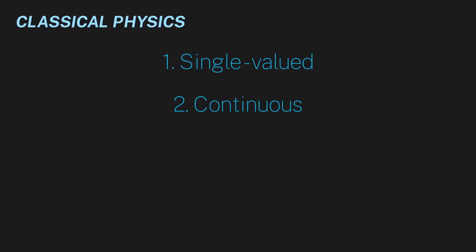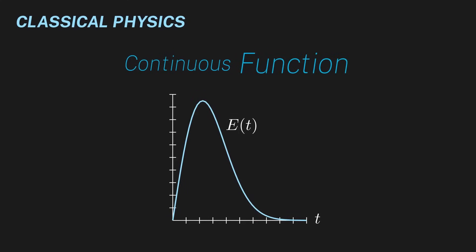Given these two observations, it hopefully seems clear that the way to model these physical quantities is with a continuous function. A function by definition only takes on one value at any single time, and a continuous function doesn't have any sudden jumps. So this is why in classical physics, we represent physical quantities with continuous functions.